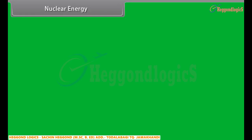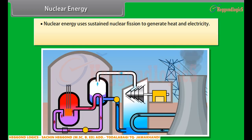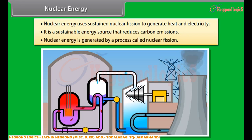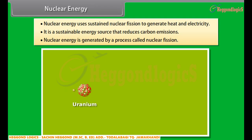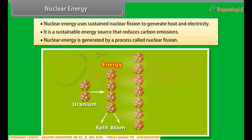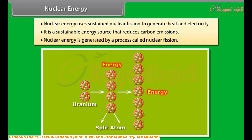Nuclear energy uses sustained nuclear fission to generate heat and electricity. It is a sustainable energy source that reduces carbon emissions. Nuclear energy is generated by a process called nuclear fission, in which the nucleus of heavy uranium, plutonium, or thorium is bombarded with low energy neutrons. The atom is then split into lighter nuclei, and a tremendous amount of energy is released. For example, the fission of an atom of uranium produces 10 million times the energy produced by the combustion of an atom of carbon from coal.